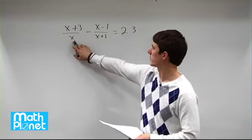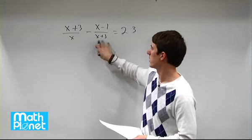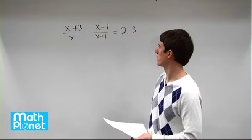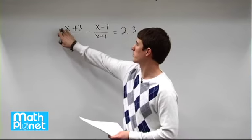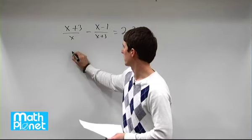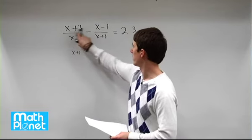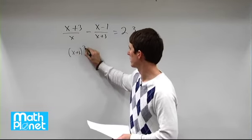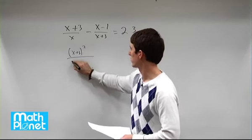So the least common denominator in both of these is just going to be this times this, so x times the quantity x plus 3. So we need to multiply by x plus 3 here and here, multiply by x here and here. So that's going to give us x plus 3, and then there's two of them, x plus 3 squared over x times x plus 3.